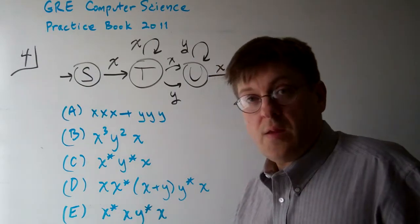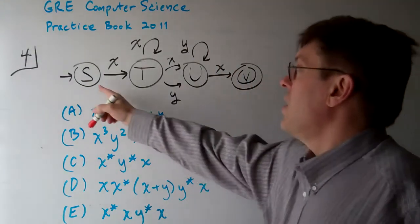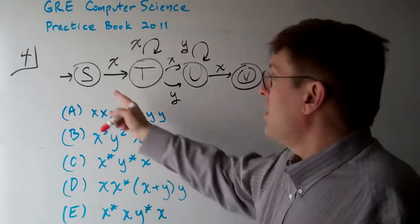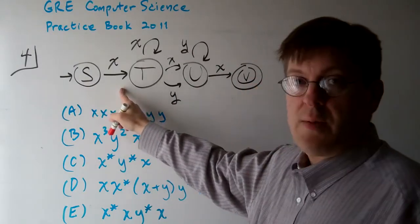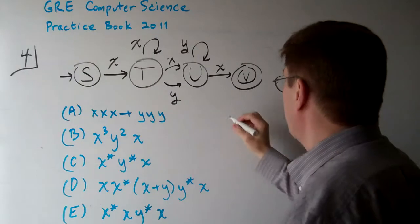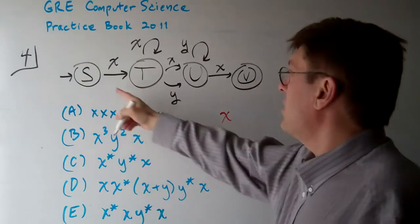Well, the way that you can figure out a regular expression is just walk through the automaton. The first thing that has to happen from start is you've got to have an X. So you have an X there.